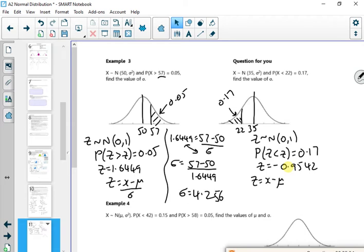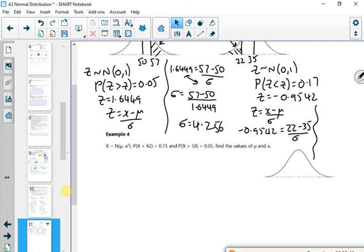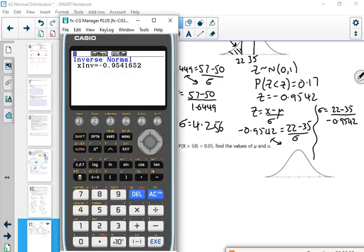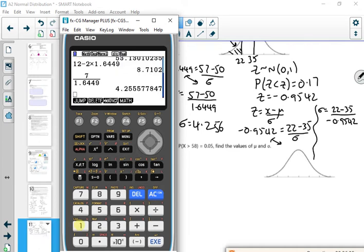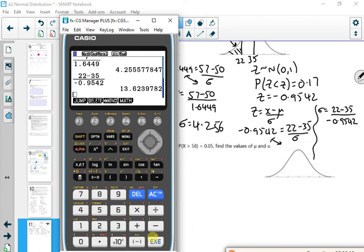So z equals x minus mu over sigma. So minus 0.9542 is x, which is 22, minus 35 over sigma. And we're going to manage to fit this in somewhere at the side here. Can you see it? Switch them over, and then sigma is 22 minus 35 over minus 0.9542. Let's give that a count then. So menu 1.